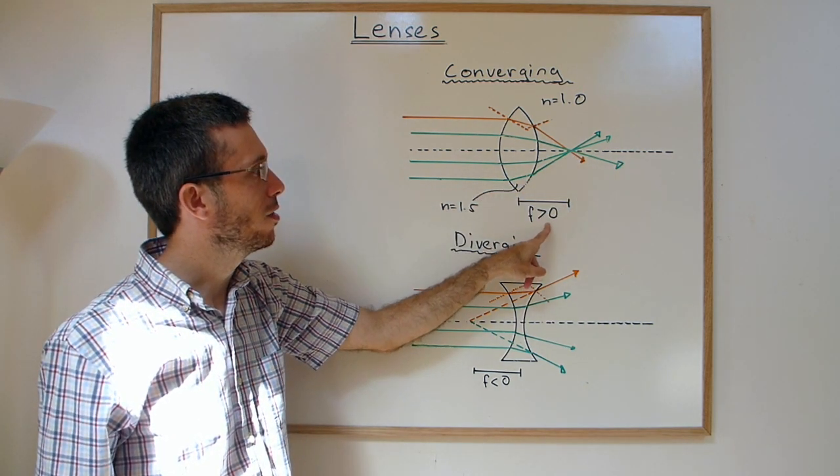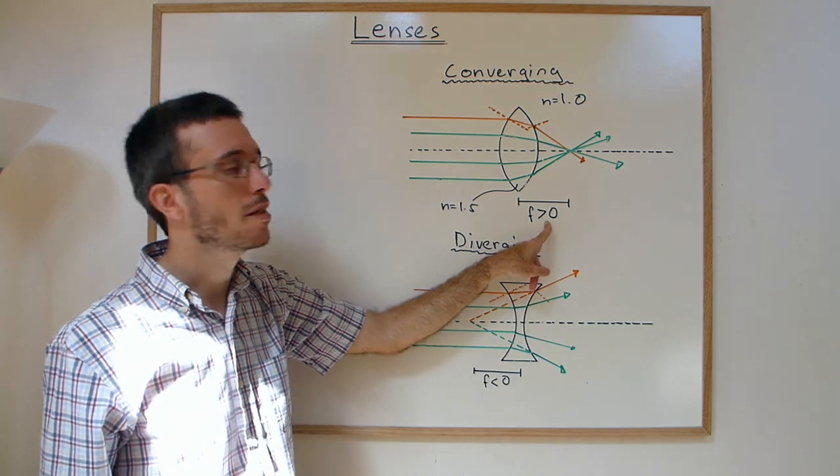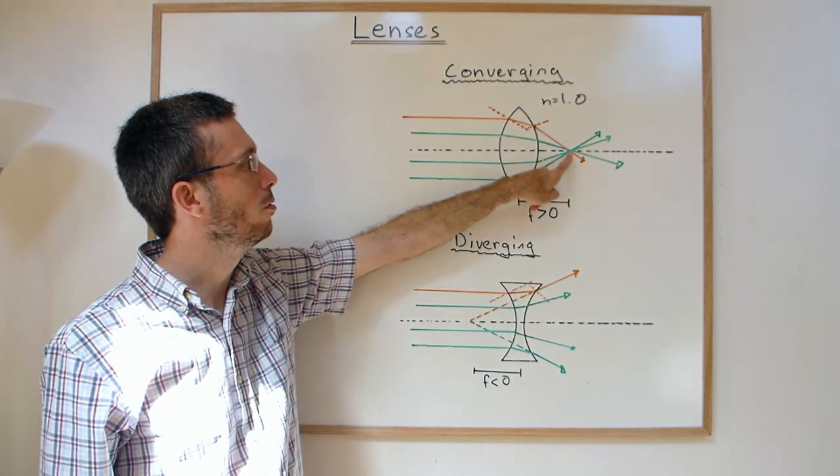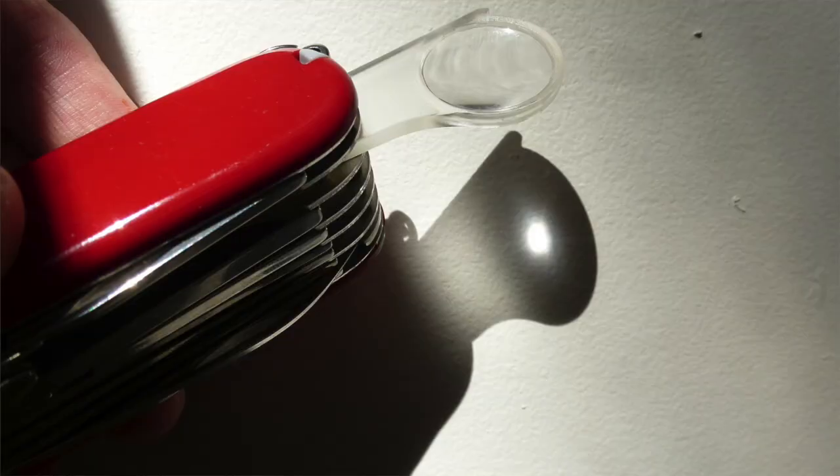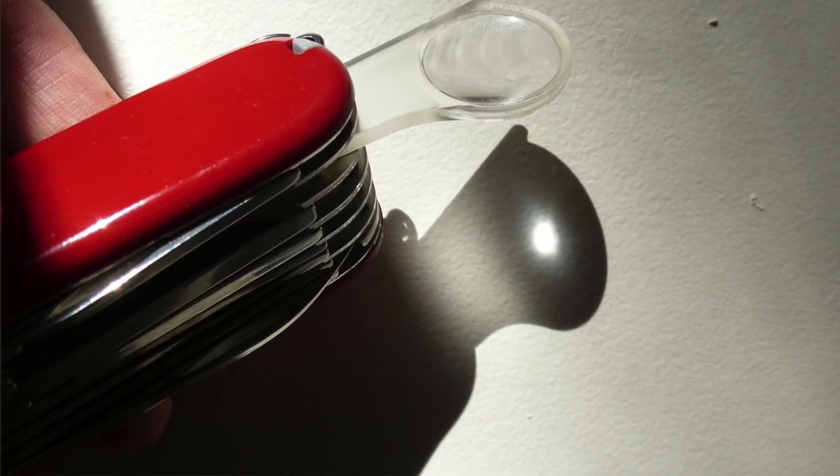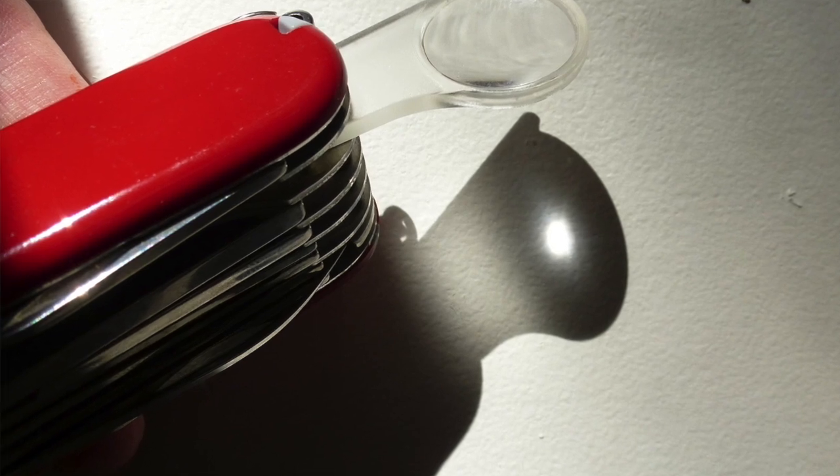We always give this as a positive number, meaning it's a real focal point. The light really meets here, and with this type of lens you can actually start a fire using that focal point.